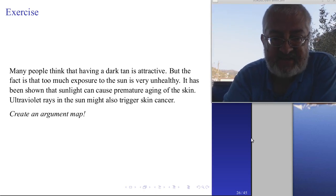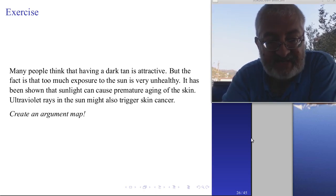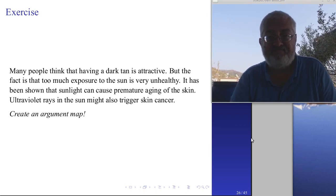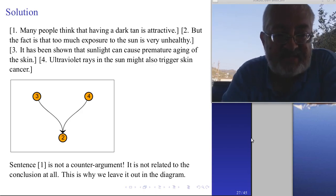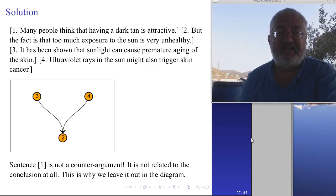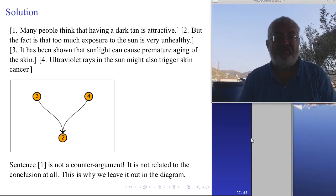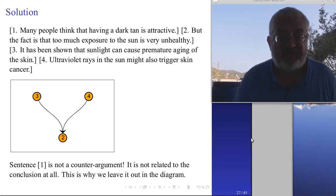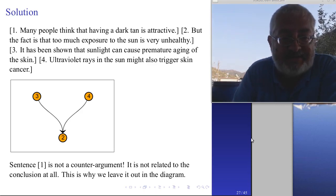Another example: 'Many people think that having a dark tan is attractive. But the fact is that too much exposure to the sun is very unhealthy. It has been shown that sunlight can cause premature aging of the skin. Ultraviolet rays in the sun might also trigger skin cancer.' Create an argument map. The solution is simpler than you might think: sentence one — 'many people think having a dark tan is attractive' — is not related to the conclusion at all. The conclusion is two. There is no relationship between one and two, so you can leave it out. You end up with only three and four leading to conclusion two.